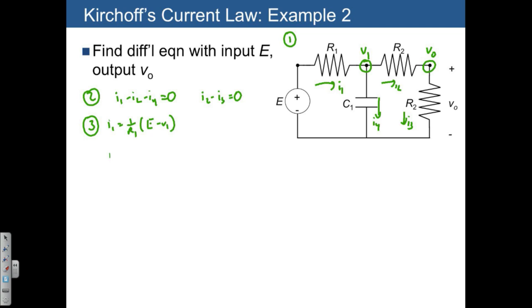I2 equals 1 over R2 times V1 minus VO. I3 equals 1 over R2 times VO minus 0.